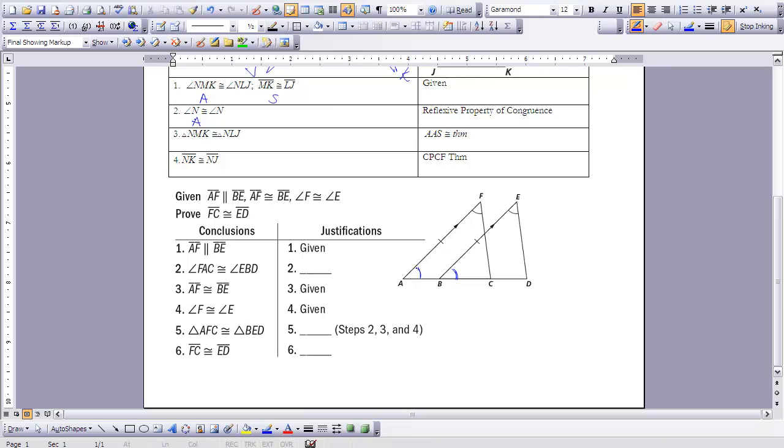then I have a set of corresponding angles here. So I can say angle FAB or FAC, either name is fine, is congruent to angle EBD. And that's because of the corresponding angles postulate.